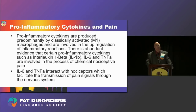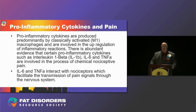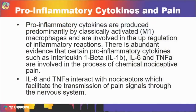The pro-inflammatory cytokines produced predominantly by M1 macrophages are involved in the upregulation of inflammatory reactions. There is abundant evidence that cytokines such as IL-1 beta, IL-6, and TNF are involved in the process of chemical nociceptive pain. IL-6 and TNF in particular interact with nociceptors, and that interaction facilitates the transmission of pain signals through the nervous system into the brain where pain is perceived — this is how inflammation causes pain.